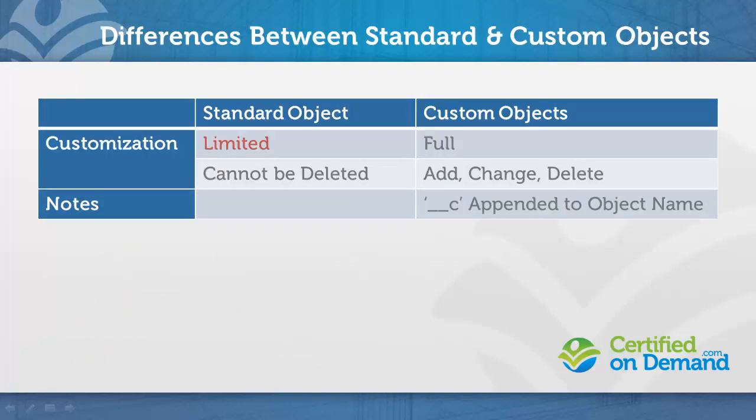Standard and custom objects are similar to standard and custom fields in the sense that the same type of limitations apply. With standard objects, you have limited ability to change their behavior or other characteristics. You can rename standard objects, but you can't delete them. With custom objects, you can add, change, delete, and otherwise manipulate as you'd like, with the exception of objects installed within a managed package, which may carry some restrictions.